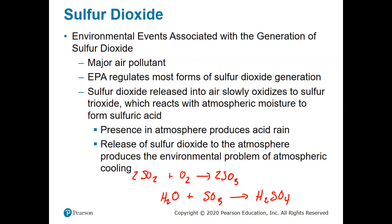Sulfur dioxide also creates an environmental problem known as atmospheric cooling. With conditions in the atmosphere being somewhat delicate, the EPA keeps a close watch on these things. From an industrial standpoint, there are regulations on what you can put into the air, and that usually involves putting a chemical scrubber in your waste stacks that catches sulfur dioxide and other pollutants and transforms them into something not as hazardous.